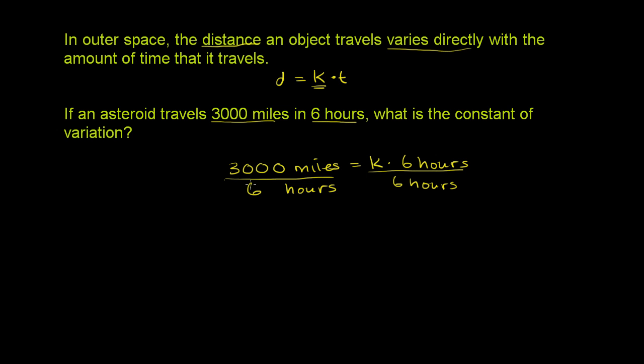So 3,000 divided by six is 500, and six divided by six is one. The hours also cancel out.